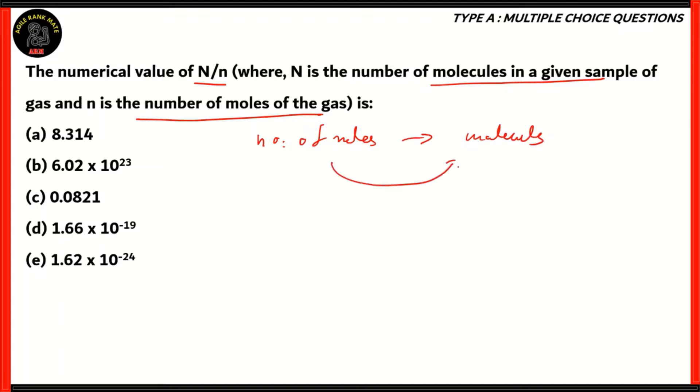For that, we use Avogadro's number. If we were to find out the number of molecules, that will be capital N, we just need to multiply the number of moles of the gas with Avogadro's number, which would be n times 6.02 into 10 raised to 23. So if you need to find the ratio between uppercase N and lowercase n, that will be equal to 6.02 into 10 raised to 23. If you want to find out the number of moles, you divide the number of molecules by Avogadro's number. If you want to find the number of molecules, you multiply Avogadro's number to the number of moles.